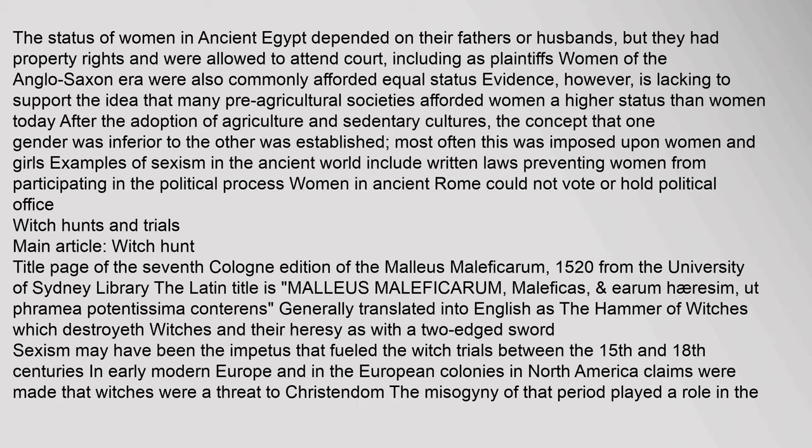The status of women in ancient Egypt depended on their fathers or husbands, but they had property rights and were allowed to attend court, including as plaintiffs. Women of the Anglo-Saxon era were also commonly afforded equal status. Evidence is lacking, however, to support the idea that many pre-agricultural societies afforded women a higher status than women today. After the adoption of agriculture and sedentary cultures, the concept that one gender was inferior to the other was established — most often this was imposed upon women and girls. Examples of sexism in the ancient world include written laws preventing women from participating in the political process; women in ancient Rome could not vote or hold political office.